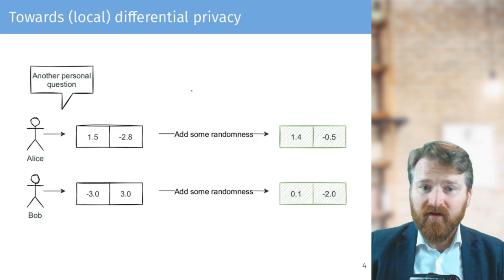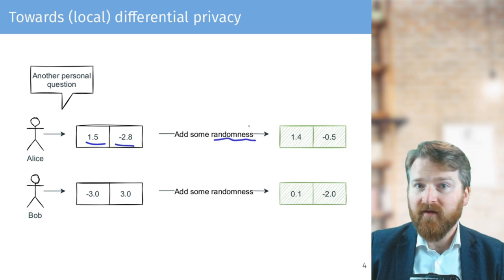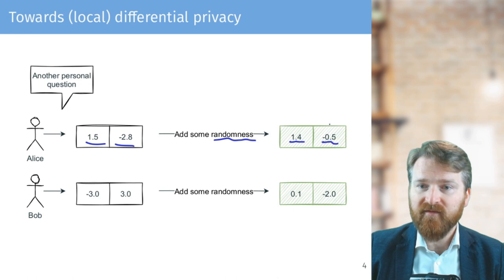And similarly, we can do it for real-valued vectors, for example. So we have the true answer here and by randomness, by drawing from a continuous distribution, for example, we get some privacy-preserving answers.